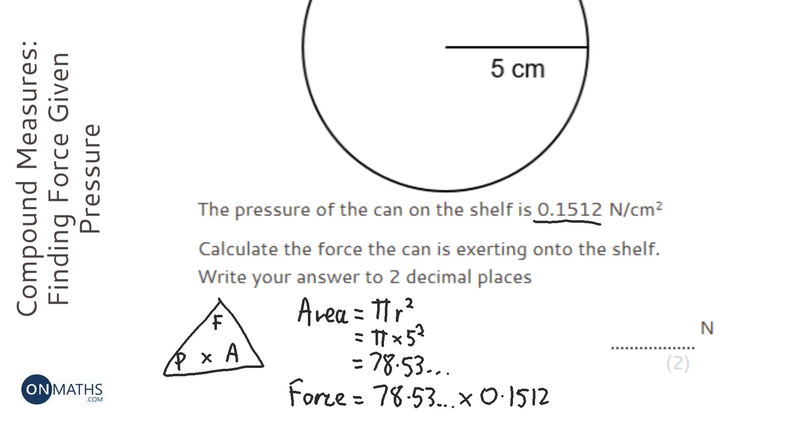And I get the answer of 11.8752 and so on, and it says it wants it to two decimal places so it's 11.87 or 11.88. Now I'm just going to check the units - we've got newtons per centimeter squared.